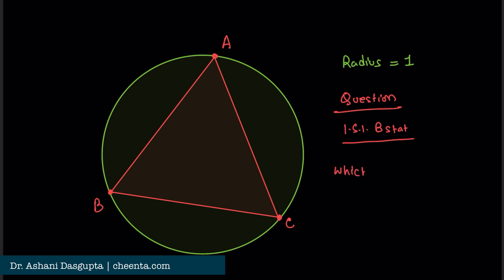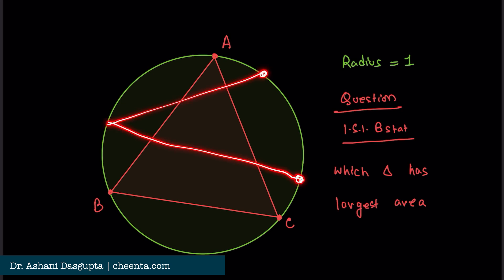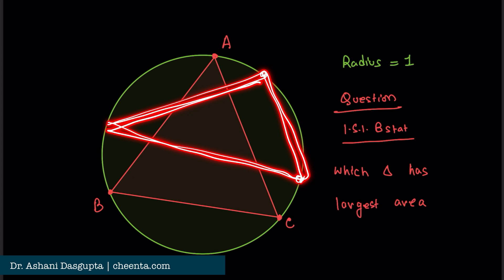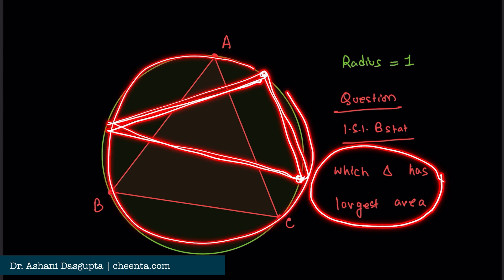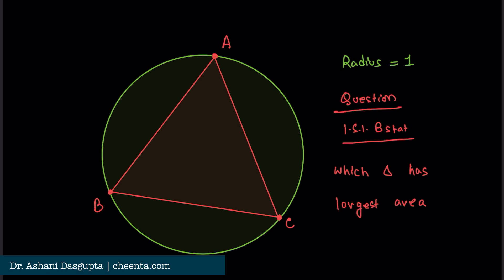You can inscribe many such triangles — whenever you pick three points you will get a triangle. Essentially, this question is asking what is the largest area triangle that you can fit in this circle. We will try this problem today and learn a lot regarding trigonometry and the use of calculus in geometry problems. If you like this sort of thing, stay subscribed, and like and share this video. Let's get started.